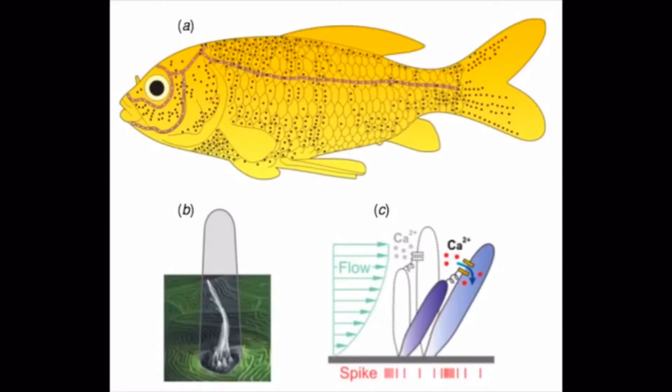These hydrodynamic stimuli include a variety of things, but most importantly water disturbances and fluctuations in pressure around the fish. This can be caused by a variety of factors, but for the fish it is most useful in identifying when they approach an object or when another organism or object passes by the fish.